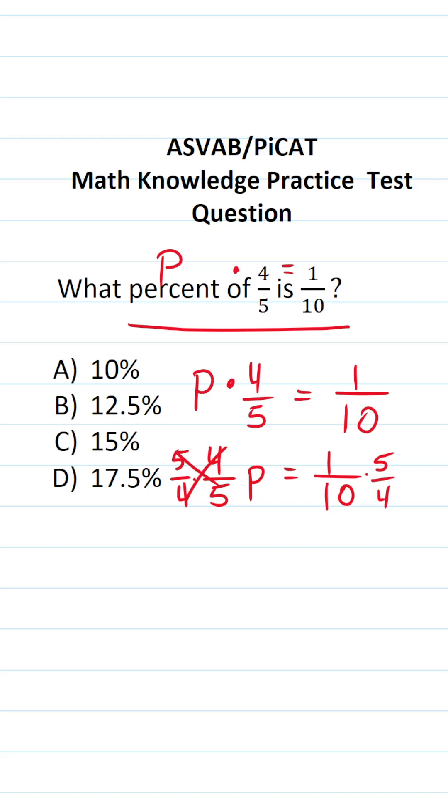In doing so, this crosses out. This says P is equal to, and what are we doing over here? We're just multiplying two fractions, so you're going to multiply straight across. And if you want, you can cross-reduce, but it's not necessary. So one times five is five. Four times ten is forty.